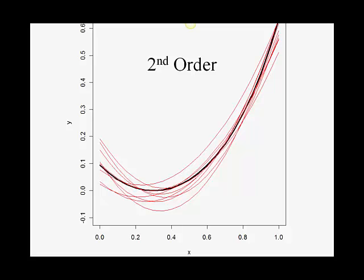Here's ten fits of a second order model to the real data, so these now allow for there to be a certain amount of curvature, quadratic curvature to things, and plotted against the truth, they look all pretty good.